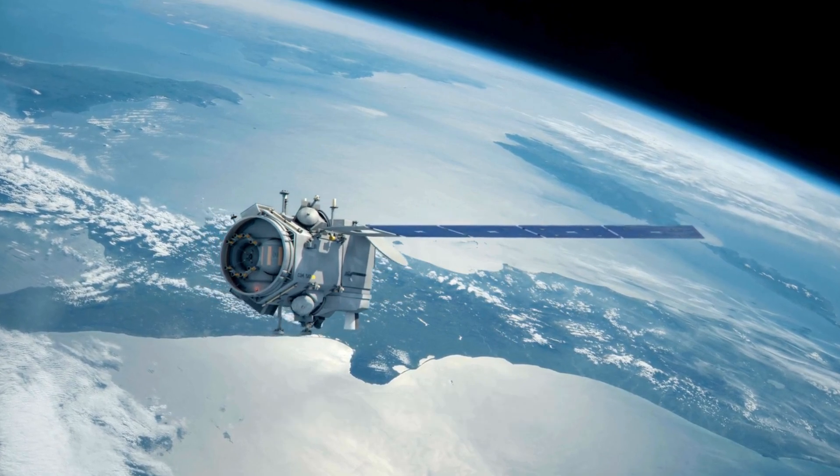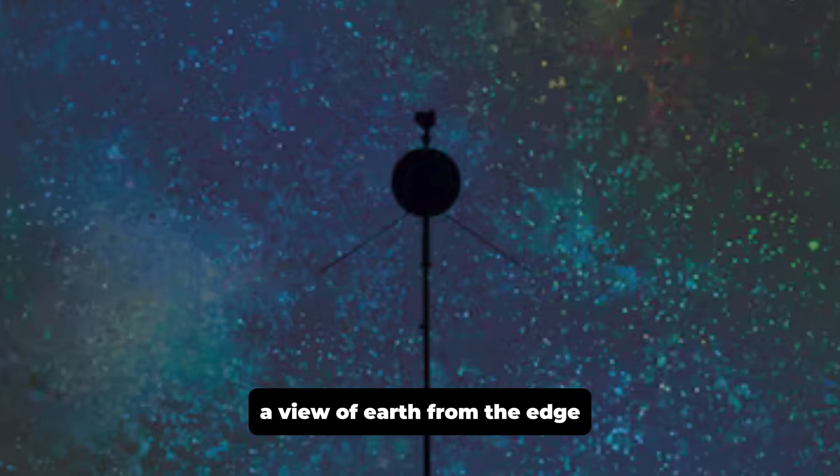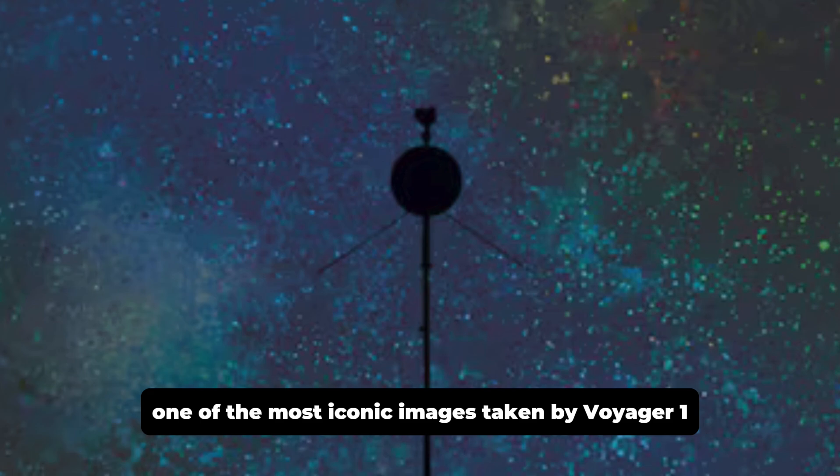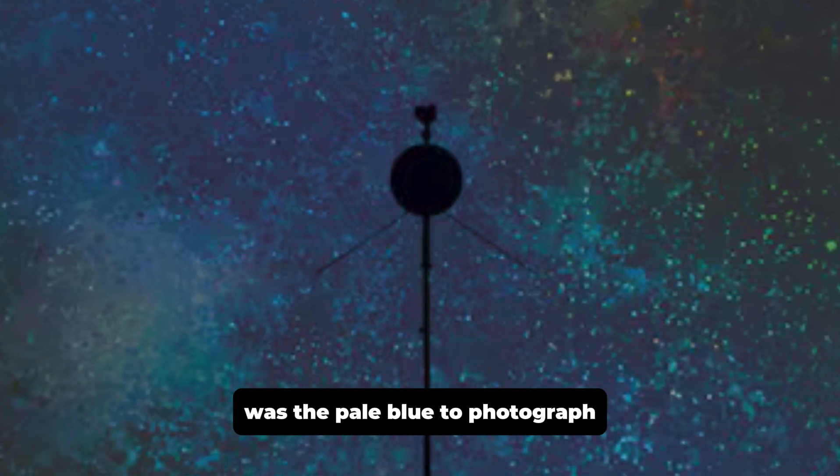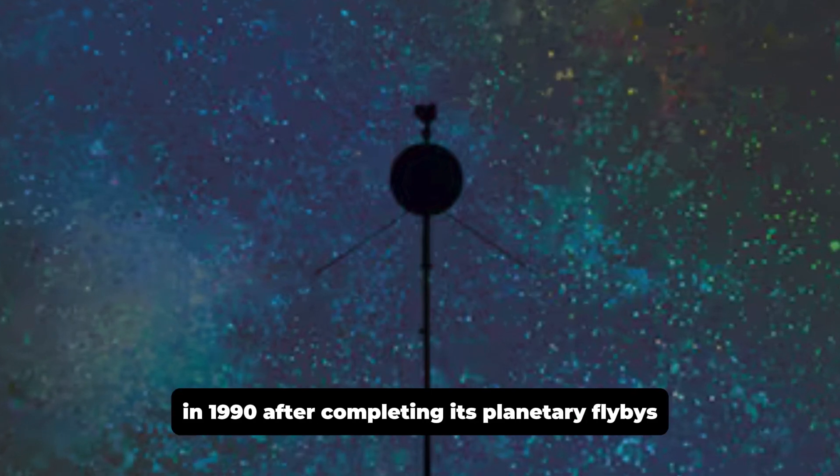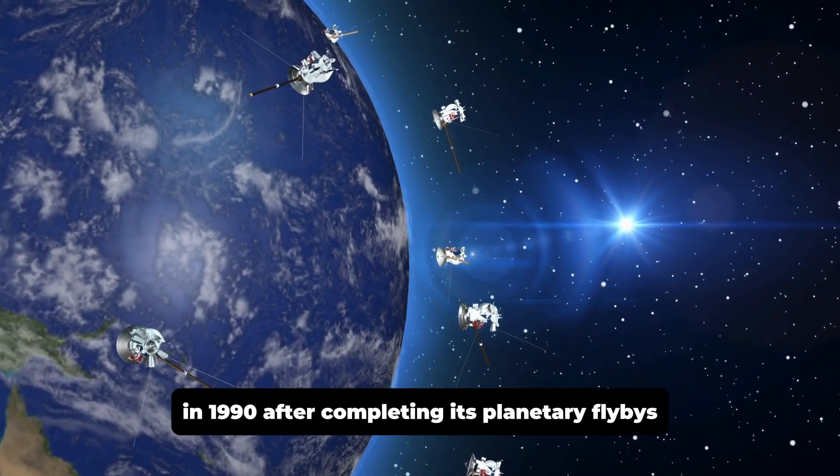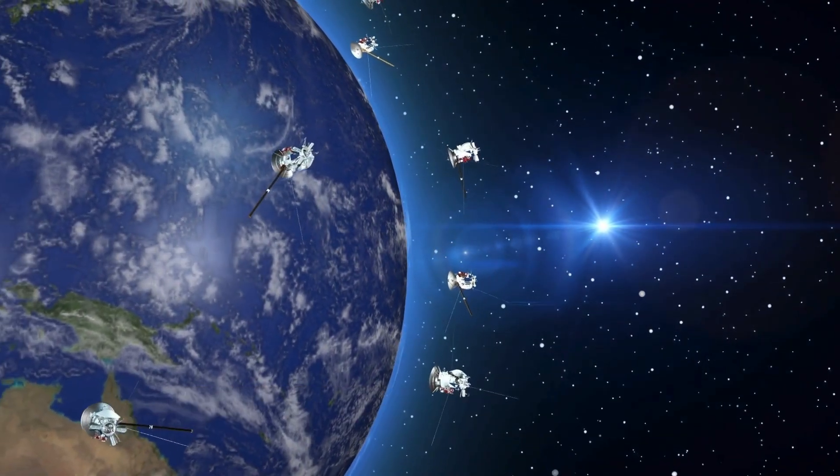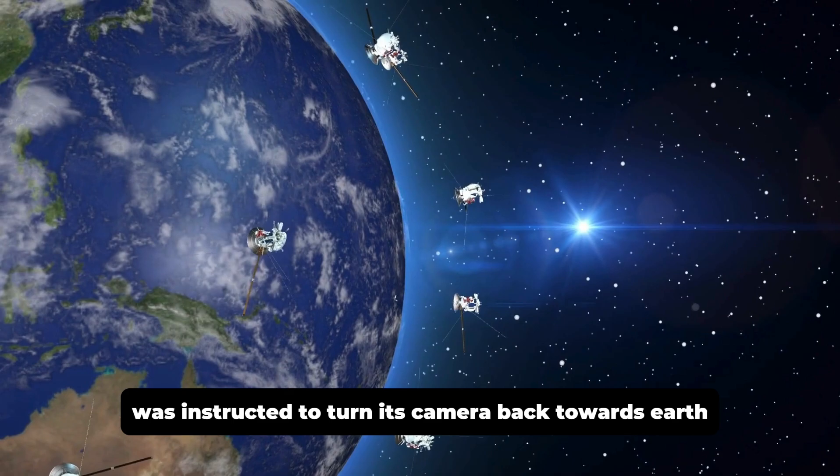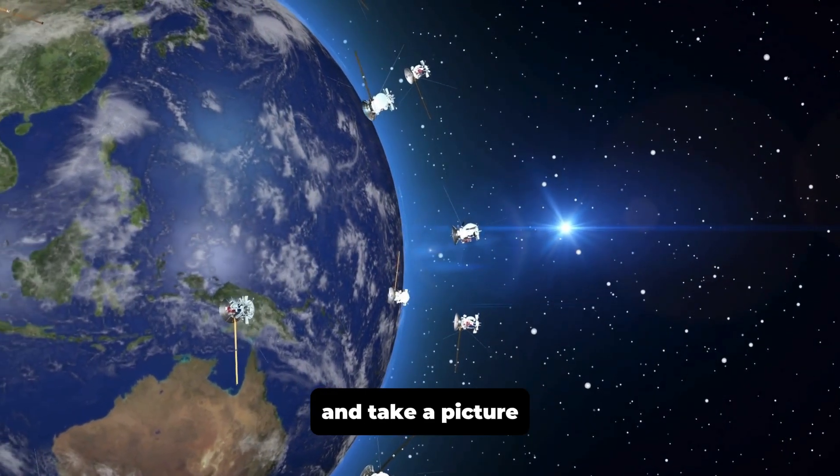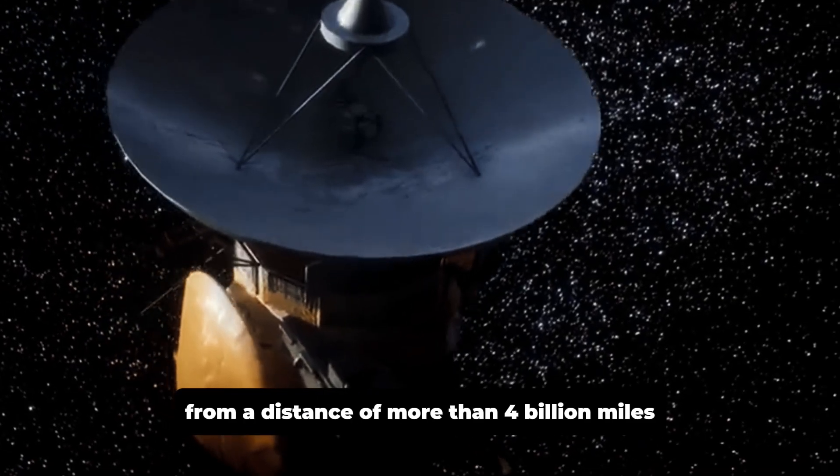One of the most iconic images taken by Voyager 1 was the pale blue dot photograph. In 1990, after completing its planetary flybys, Voyager 1 was instructed to turn its camera back towards Earth and take a picture from a distance of more than 4 billion miles.